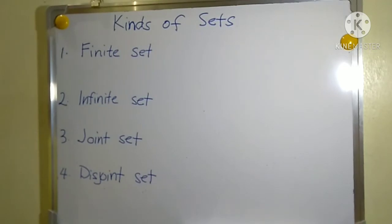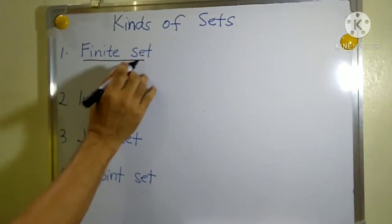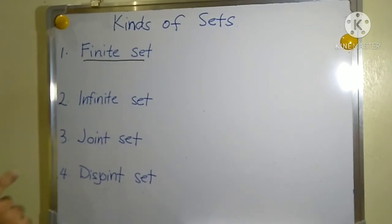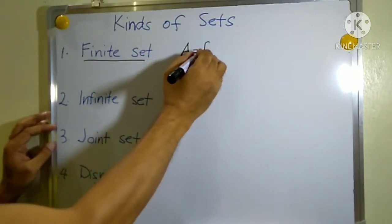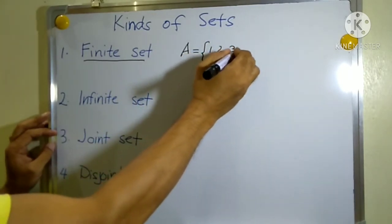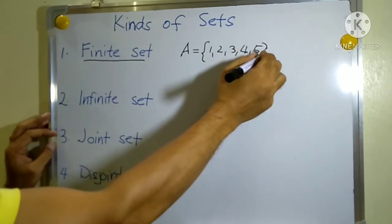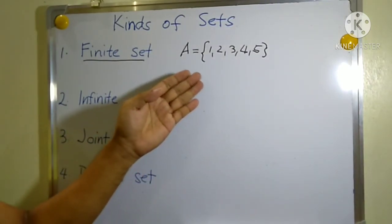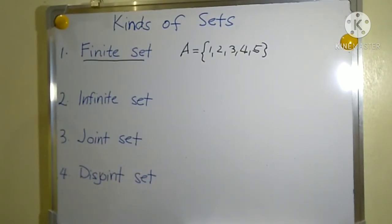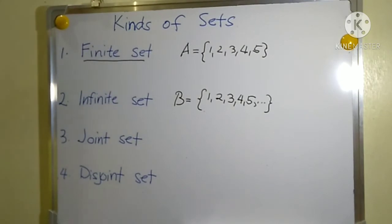Let's start our lesson on the kinds of sets. The first kind of set is a finite set. This is a kind of set whose elements are limited, or those elements are countable. For example, set A is a set whose elements are one, two, three, four, and five. There are only five elements that belong to set A and there are no other elements, so this is called a finite set.